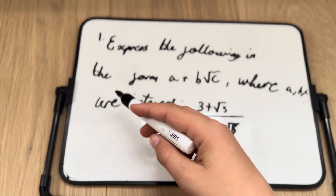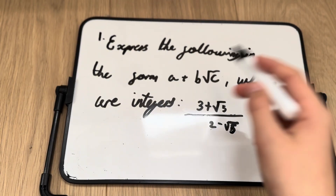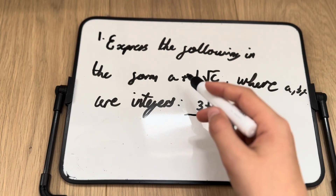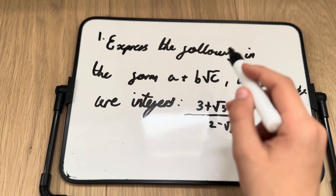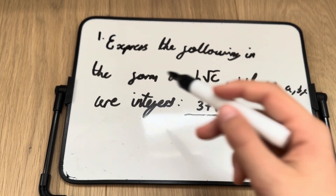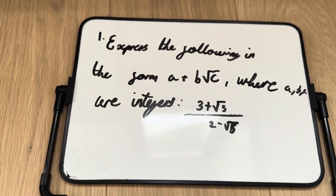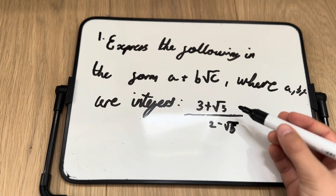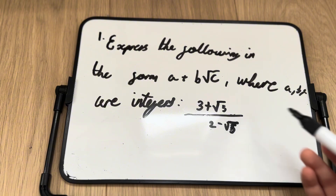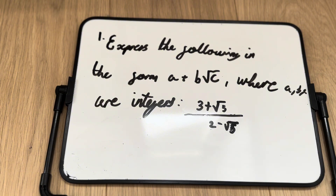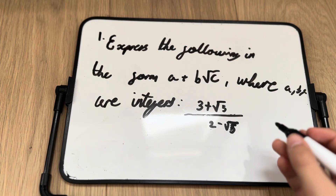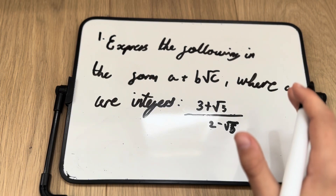Question one: express the following in the form a + b√c, where a, b, and c are integers. The expression is (3 + √5) divided by (2 − √5). Try this by yourself first — if you need help, I'll be explaining it. Pause the video now if you want to work it out yourself.